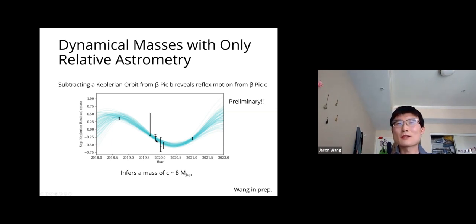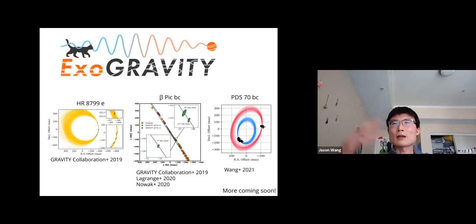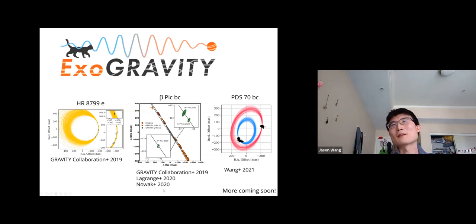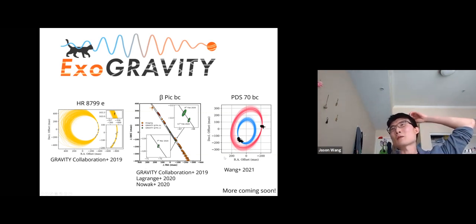That's essentially some of the highlights from the ExoGRAVITY program so far. Published results include the first planetary detection with GRAVITY on HR 8799e, a suite of papers on the Beta Pic system now containing two planets, and a paper on the PDS 70 protoplanet system. There are many more planet results coming soon—stay tuned.